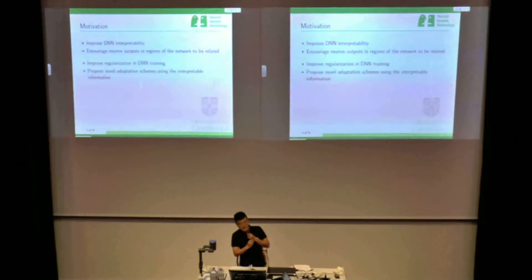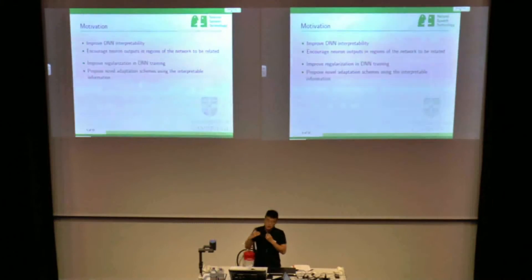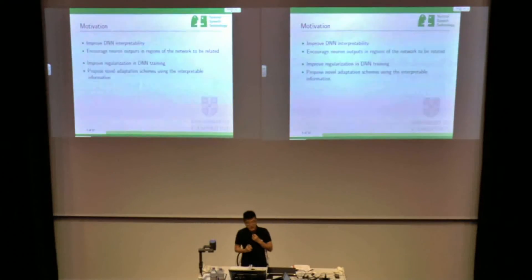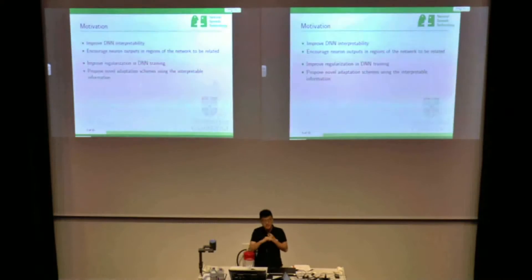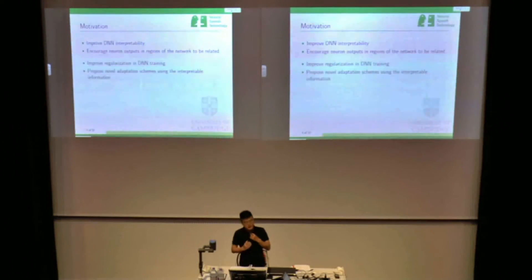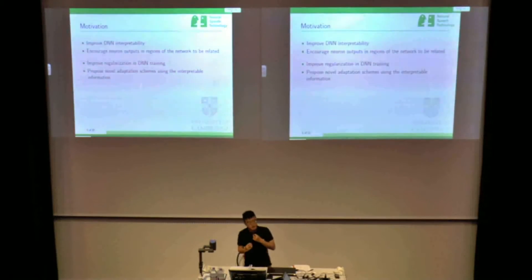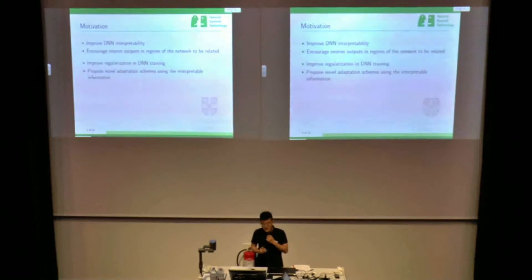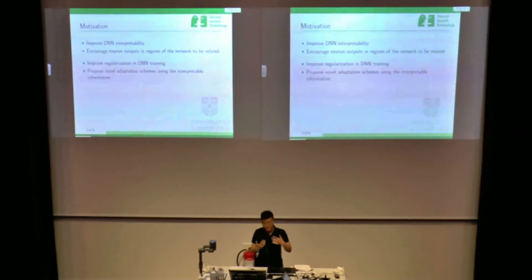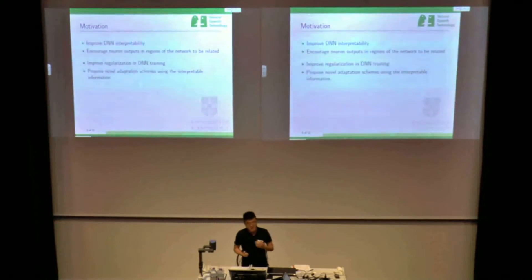So the aim of stimulated neural networks is that we hope to improve the interpretability of DNNs, in which we encourage the neuron outputs in different regions of the neural network to be related. This kind of model can improve regularization in DNN training, and with this interpretable information, we can propose novel and better adaptation schemes.